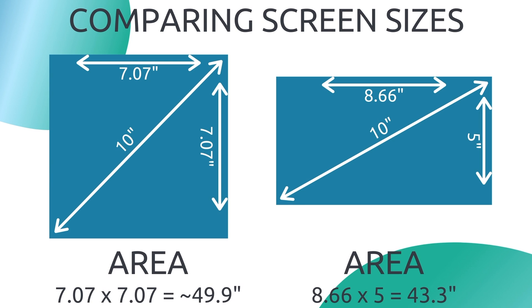Take this example. Here we have two 10-inch screens. However, one is a square and one is a rectangle. Calculating their individual areas shows us that the square screen is actually 15% larger overall than the rectangle screen. If these were real products, they would both be advertised as having a 10-inch screen, despite the significantly larger surface area of the square screen.